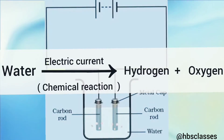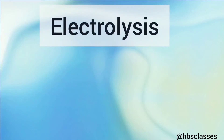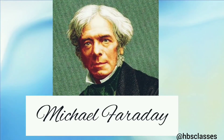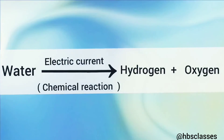The chemical decomposition produced by passing an electric current through a conducting liquid is called electrolysis. The word electrolysis literally means 'breaking up by the action of electricity.' Michael Faraday was one of the greatest scientists of all time — it was he who introduced the word electrolysis into the language of chemistry. The decomposition of acidified water into hydrogen and oxygen by passing electric current is an example of electrolysis.